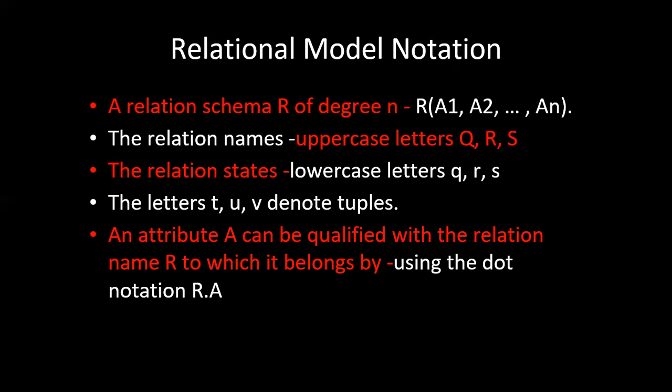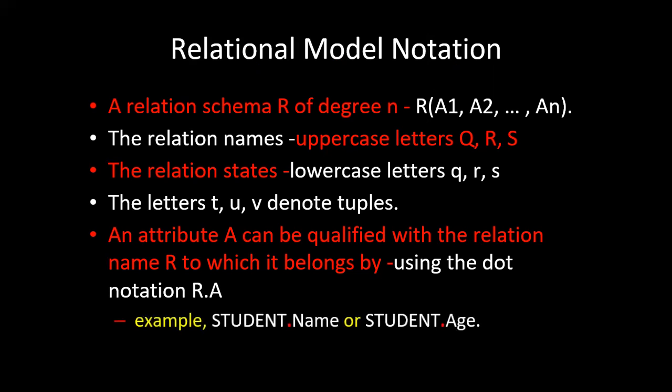When specifying which attribute belongs to which relation, we use the dot operator. An attribute A belonging to relation R is written as R.A — for example, name belonging to the student relation is written as student.name. This is useful when two tables share an attribute name, like both a student table and employee table having 'name'. Writing student.name versus employee.name removes the ambiguity about which name to display.